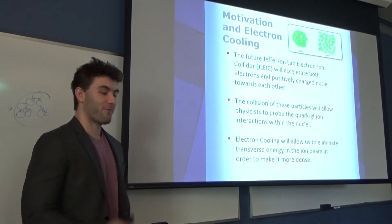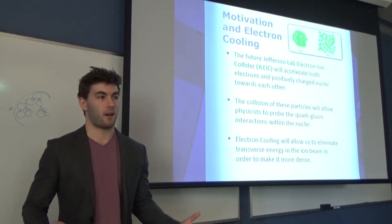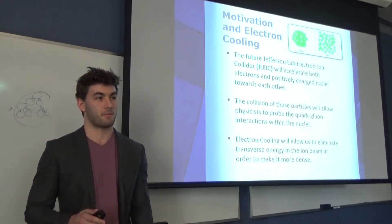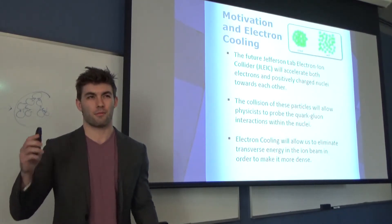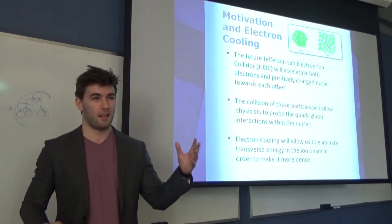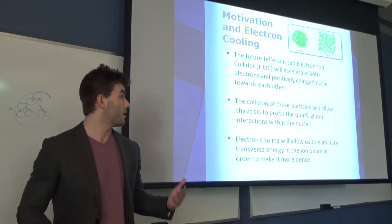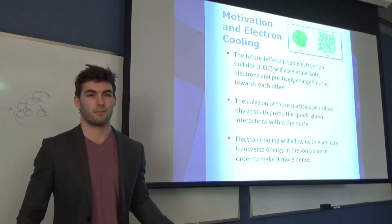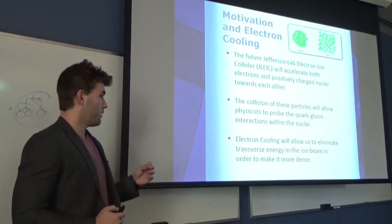A few things about the Electron-Ion Collider is that we want to accelerate electrons and positively charged nuclei towards each other. We want to do this so that we can probe the interactions between the quarks and the gluons inside of the nuclei. The way we look at things normally is by photons scattering off of an object. This works on a similar scale except instead of photons, we're using electrons because we want to look at things smaller.